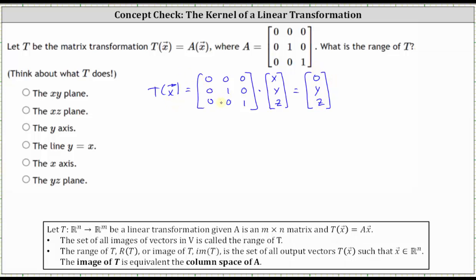Notice how the transformation sends the X component of every vector in R^3 to zero, and Y and Z could be any real number. So this might be enough to recognize that the range is going to be the YZ plane because we have a projection onto the YZ plane.